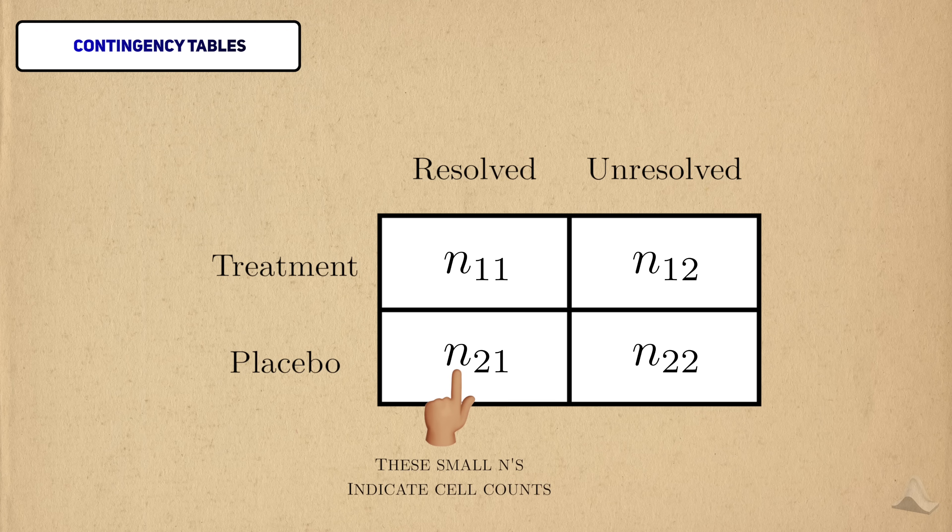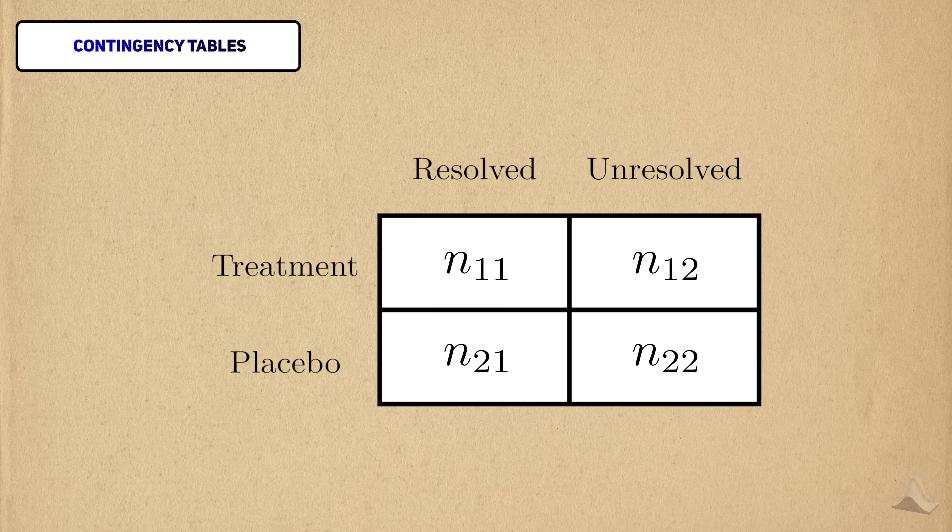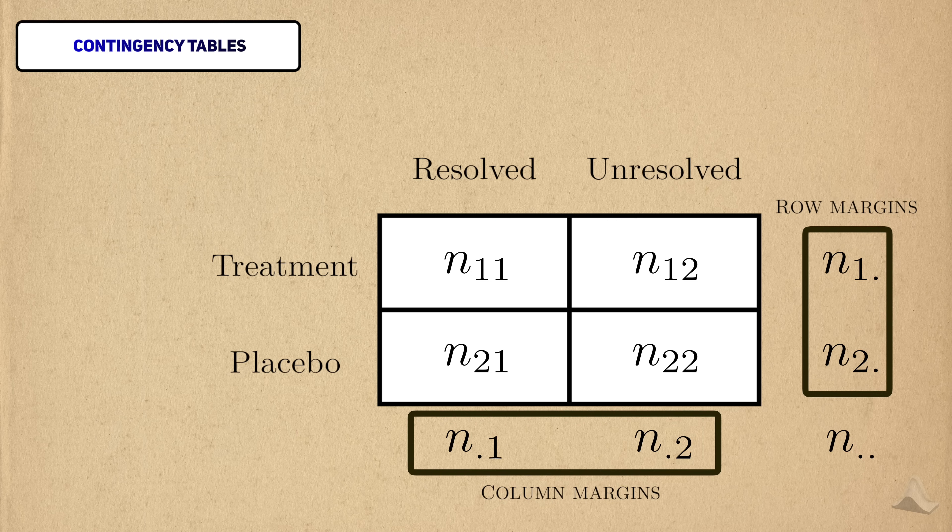We'll denote each of these counts with small n's, with a subscript to denote the cell that they stand for. It's also typical to list out the totals for each column, row, and of the entire table itself. These totals are called the row and column margins, while the overall sample size is called the grand total.